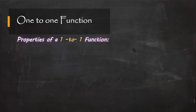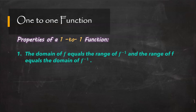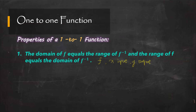Now let's see the properties of a 1-to-1 function. The first property is: the domain of f equals the range of f⁻¹, and the range of f equals the domain of f⁻¹. For the original function f, we have x as our input and y as our output — x is the domain and y is the range. However, in the inverse function, it's the opposite: y is the input and x is the output.